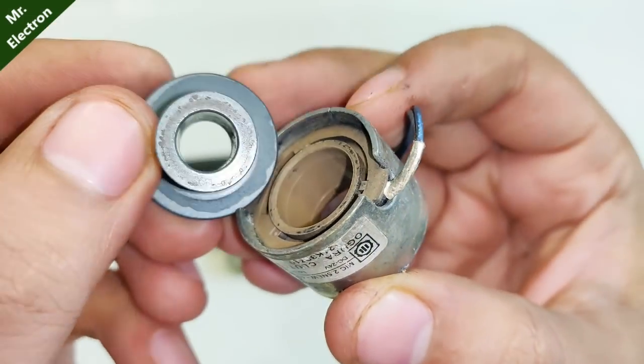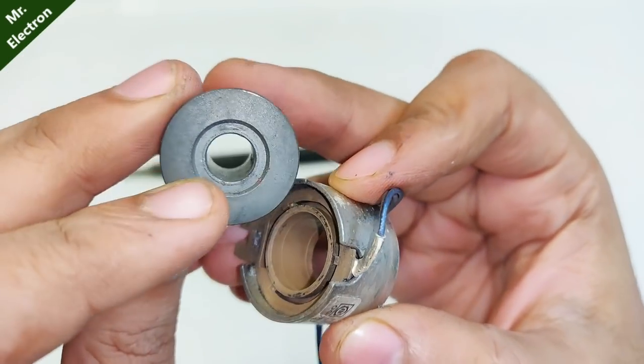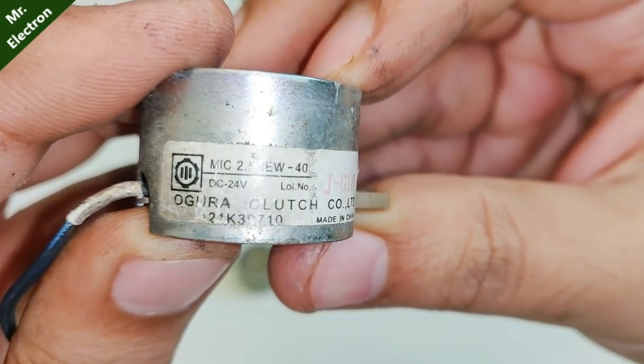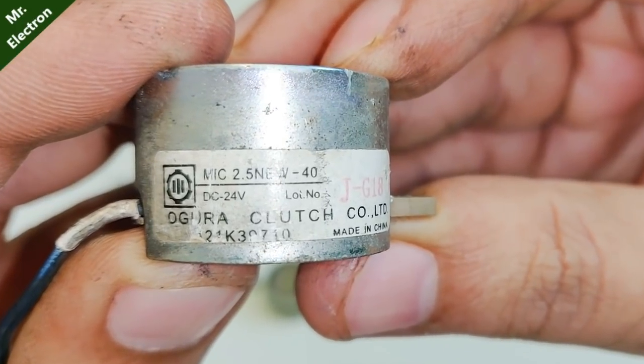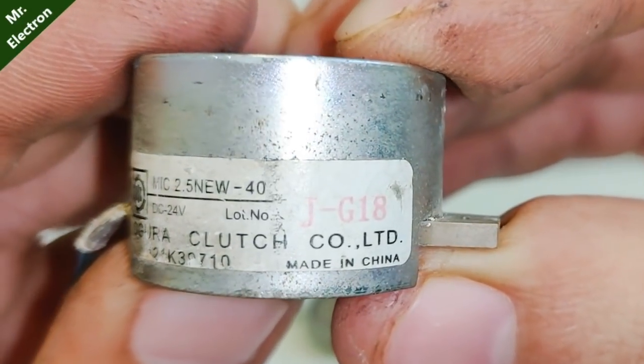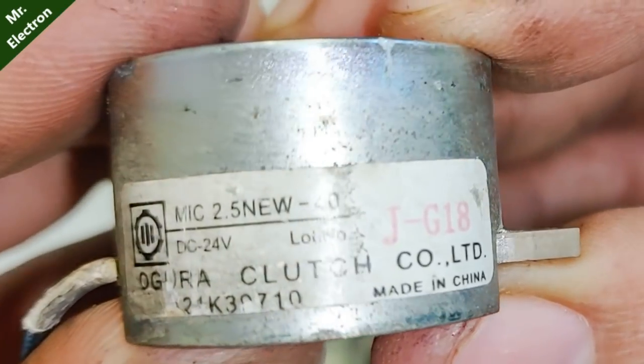As you can see there is a metal piece in between and a plastic piece and a gear. And the label says that it is a 24 volts clutch but for an electromagnet I'm going to use it at a much higher voltage input.